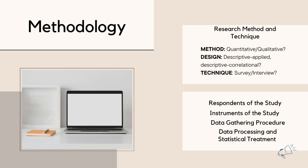You define the research method, cite the source who provides that definition, and then identify the research design — whether it is descriptive, descriptive applied, or descriptive developmental. You define each design type and cite the source for each definition.